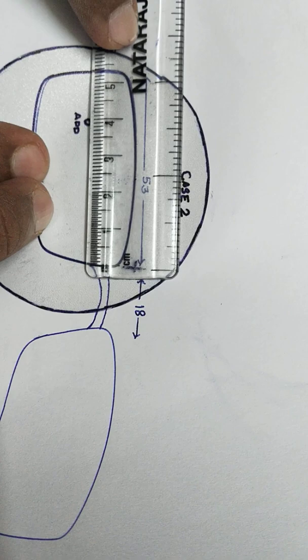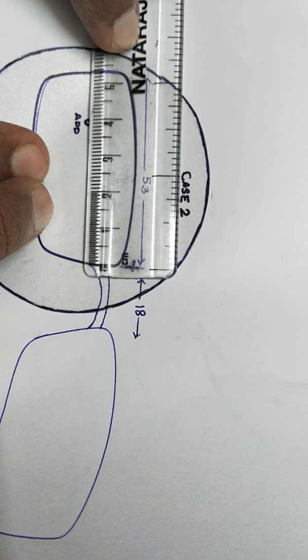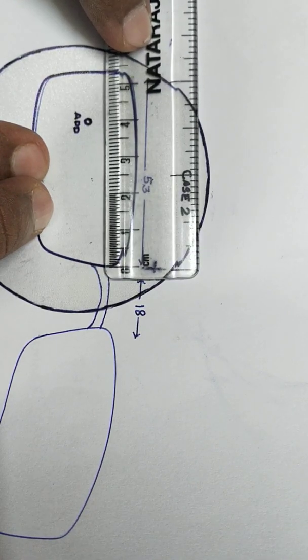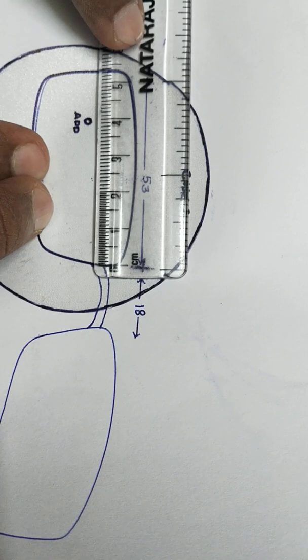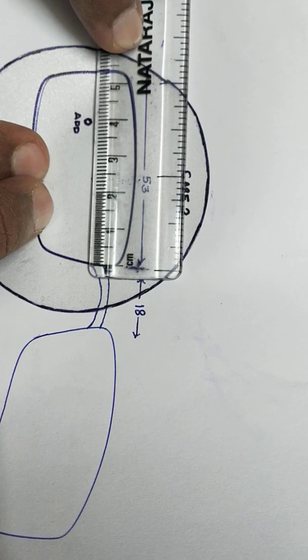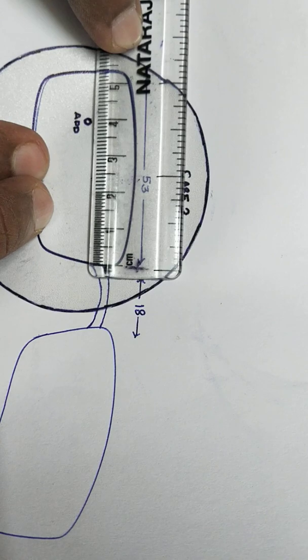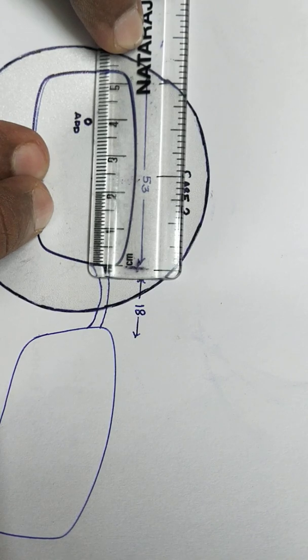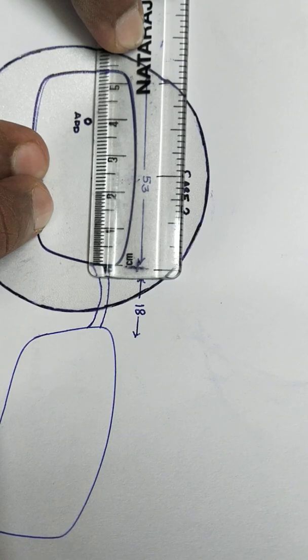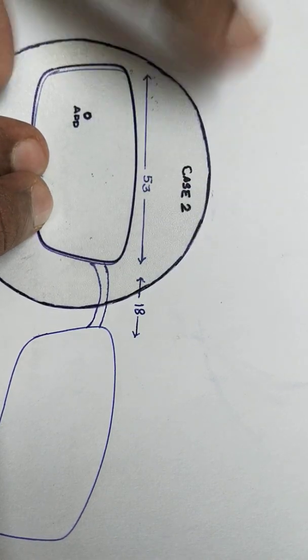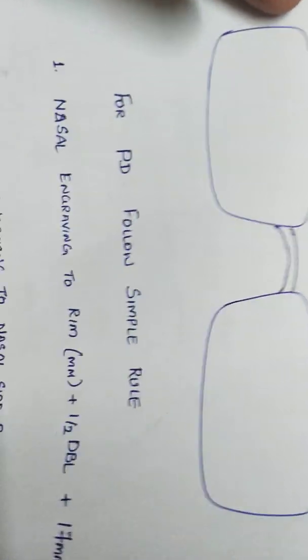From the temple you can see the zero, which I have kept on the deepest part. You can see that this is exactly 40 mm. Now for this temporal engraving, what we have to apply - the rule is very simple again.